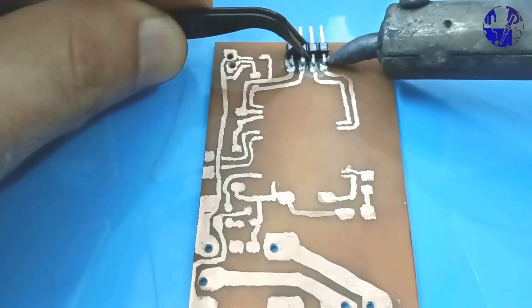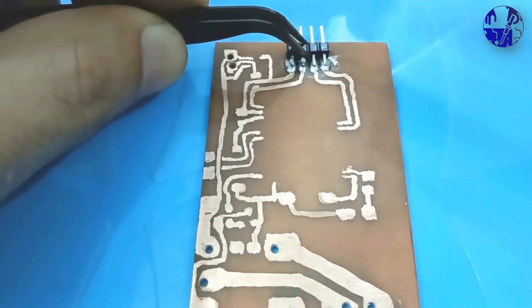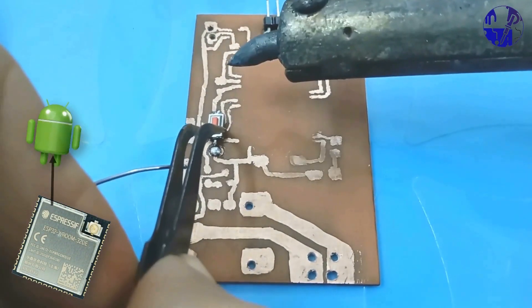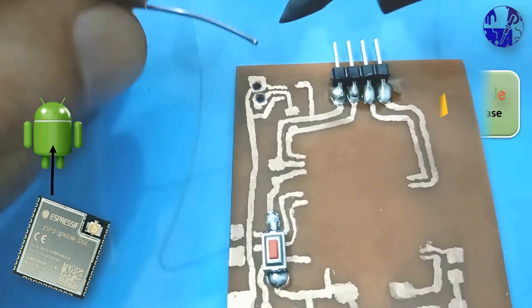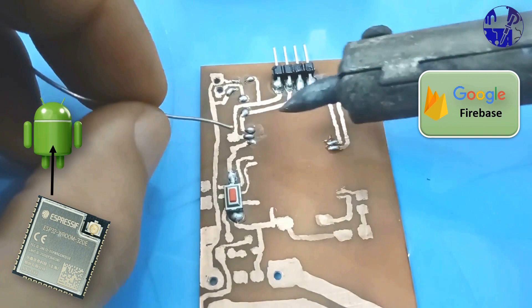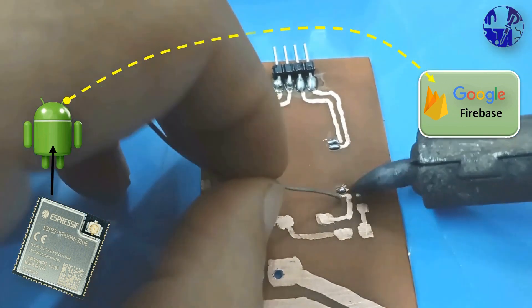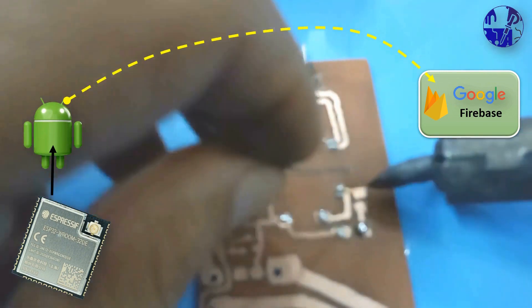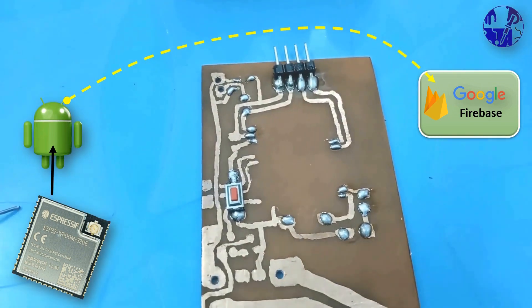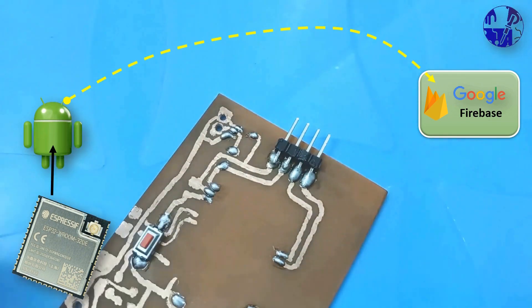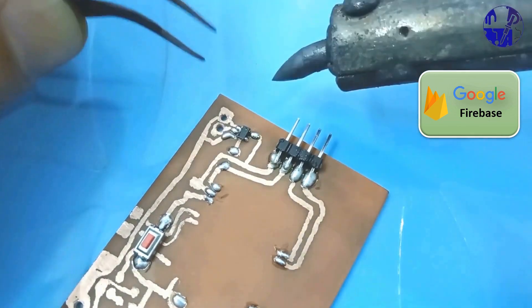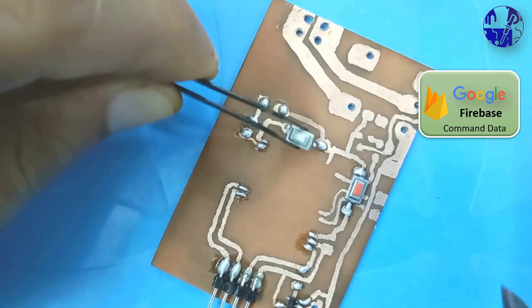In this Wi-Fi remote control switch, we will make two-way data transmission between ESP32 and Android. First, commands are sent by an Android device from anywhere in the world to the Google Firebase real-time database server. The command data is consistently available to be read by any ESP32 Wi-Fi connected device from any part of the world.